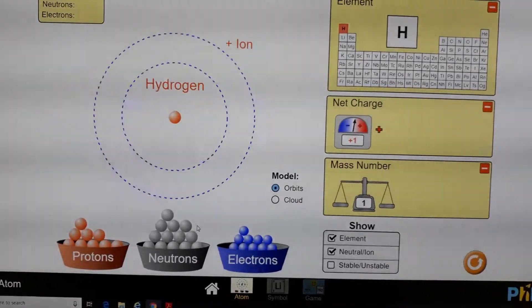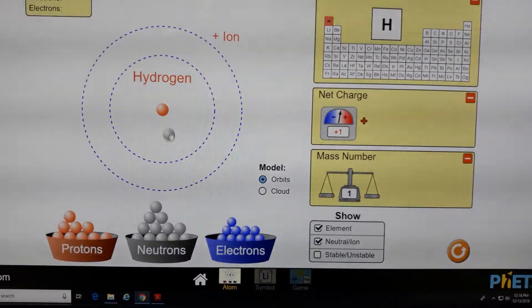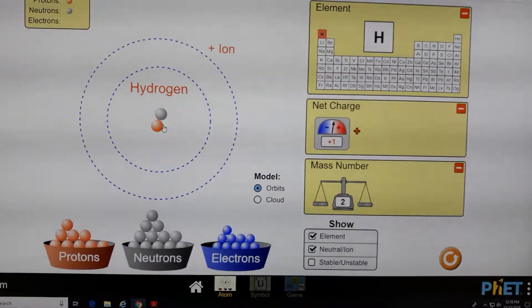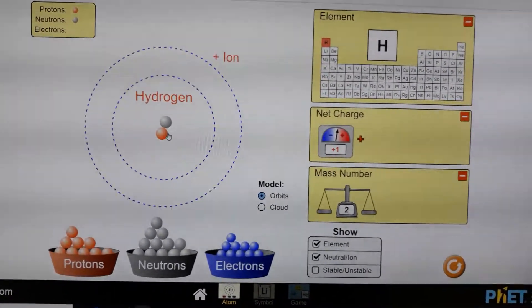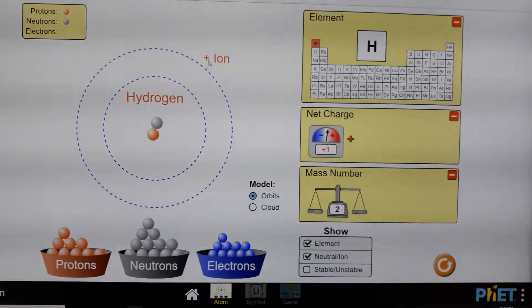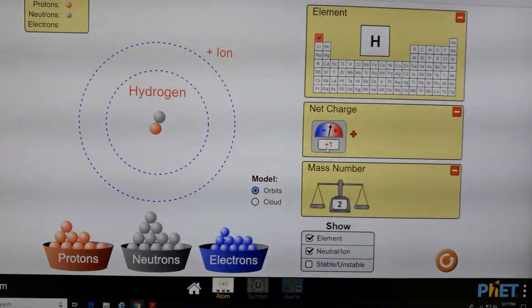Now, if we want, we add one neutron. Because in the nucleus, we have the same amount of neutrons and protons. Nothing changed. It's still an ion with a net charge of 1.